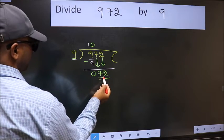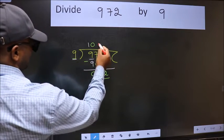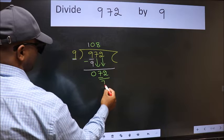Now 72. When do we get 72 in 9 table? 9 times 8 is 72.